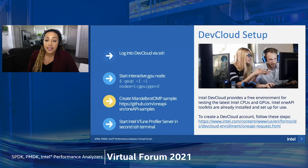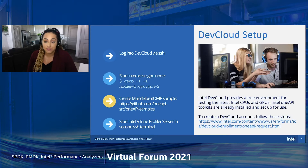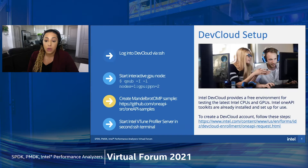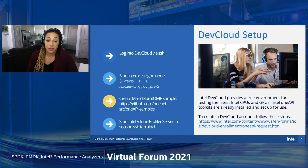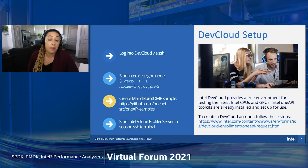Intel DevCloud provides a free environment for testing the latest Intel CPUs and GPUs. Intel OneAPI toolkits are already installed and ready to go. Running workloads on the DevCloud is straightforward once you've opened an account and configured your SSH connection. First you log in — we'll be using the Cygwin setup for the demo. This brings you to a login node, then you start an interactive GPU node using the command shown. We'll also use the DevCloud node to start the Intel vTune profiler server when we get to that part of the demo.